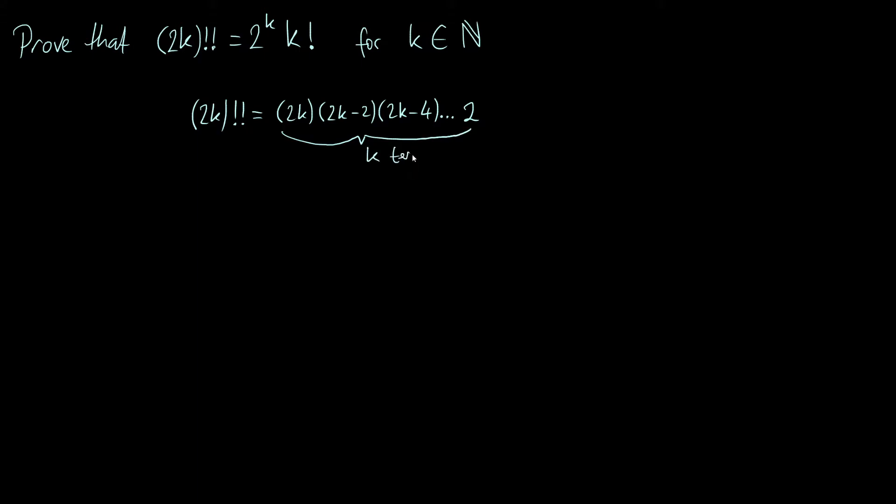We've got k terms, because we started with 2k and we're stepping all the way down to 2, but we're taking steps of size 2. So it takes k steps to go from 2k down to 2. We've got k numbers multiplied together.